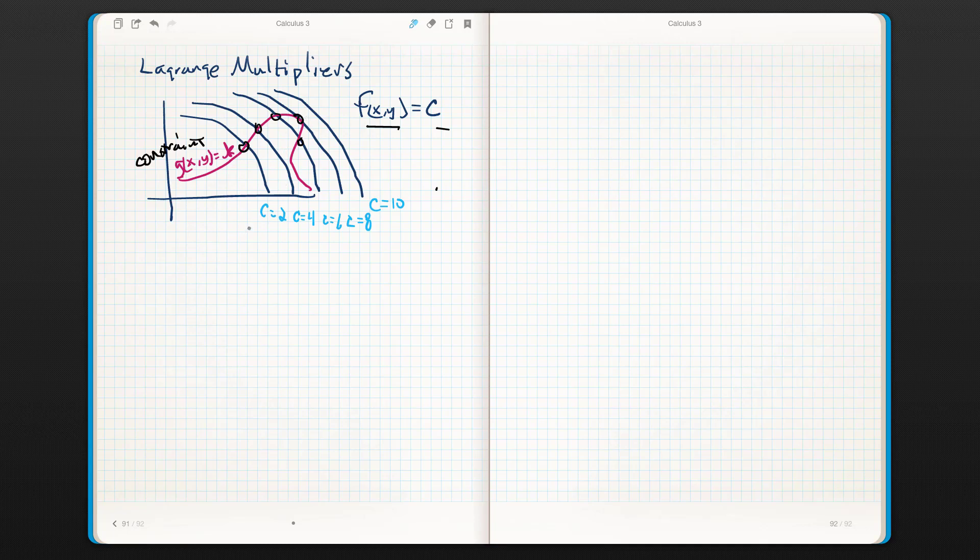Now why is that important? Well, because it gives us a way to solve. Why is that important? Well, because if their orthogonal lines are parallel, then their gradients are parallel as well. In other words, if I take the gradient of f of xy, this is going to be equal to the gradient of g of xy.